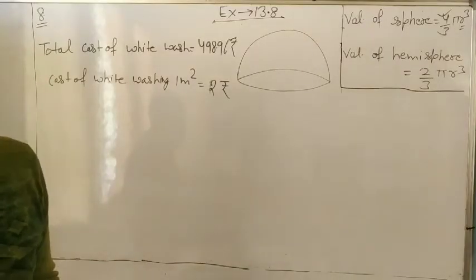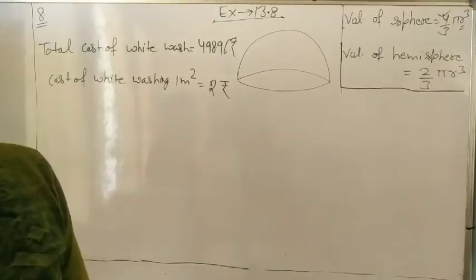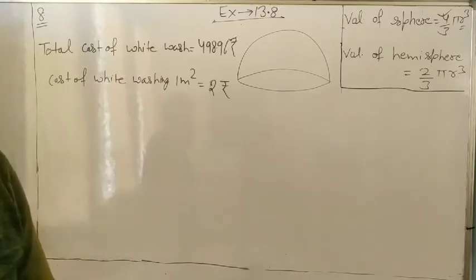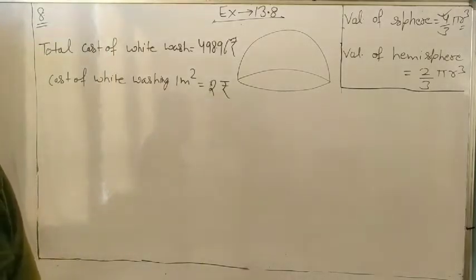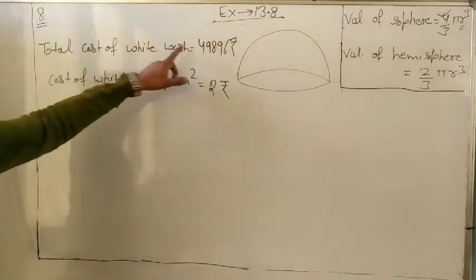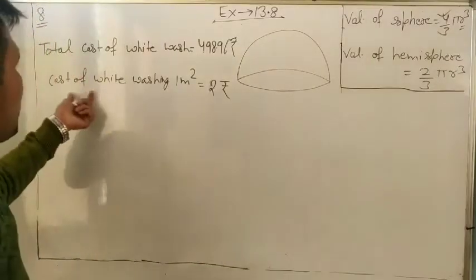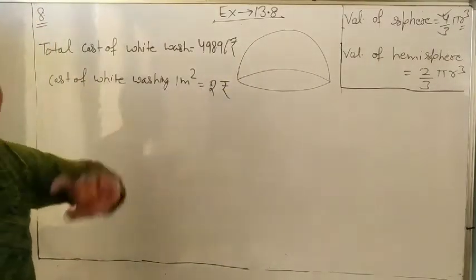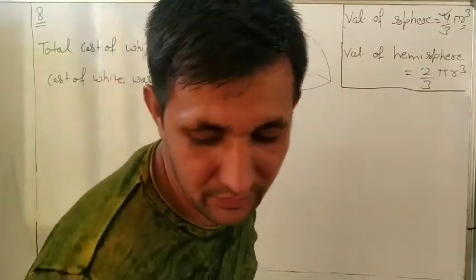The whitewash is done at a cost of 498.96 rupees total. One more thing is given: the cost of white washing one meter square is equal to two rupees. So find the inner surface area.